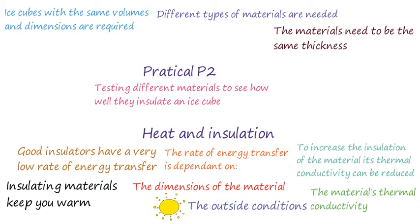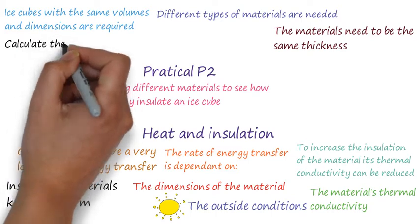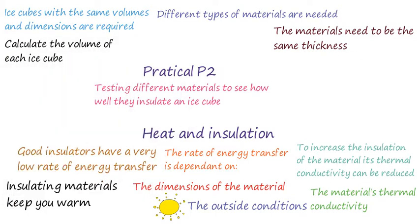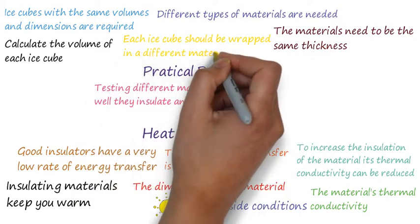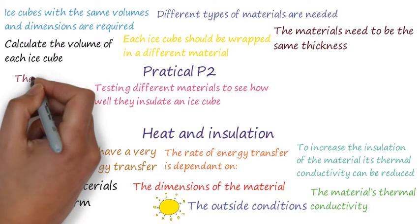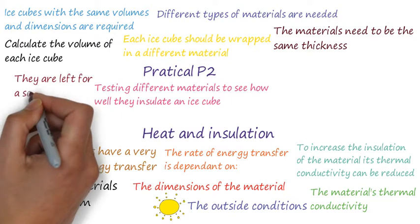To make it a fair test the materials need to be the same thickness, so you may need a few layers of certain materials. To start the experiment you need to know the volume of each ice cube and to do this you need to find the average length and cube it. Now wrap each ice cube in different materials and leave it for a set amount of time, this could be 20 or 30 minutes.